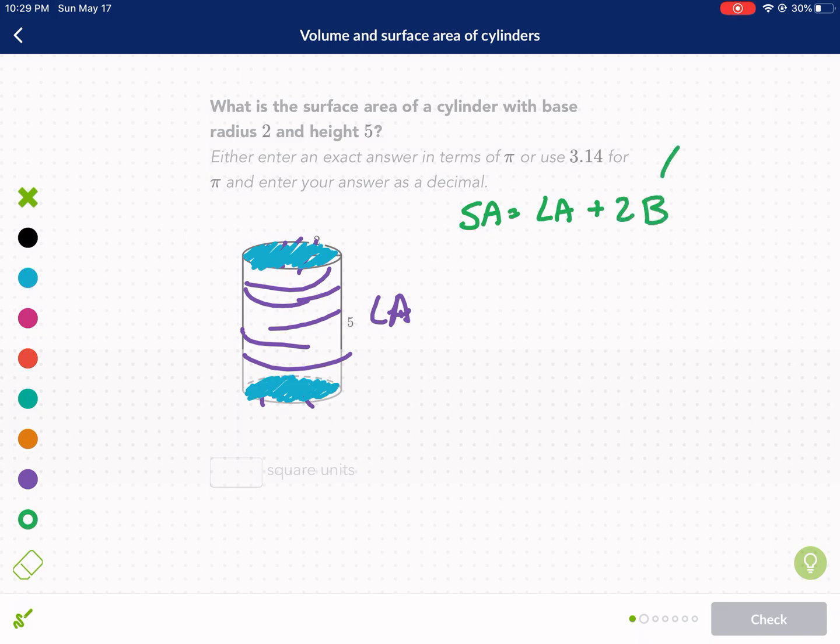And this big B means area of a base. Let's go ahead and start with what we know. We know the area of a base is equal to πr². We know the radius is 2, so we can plug that in, and we have the exact same area of the base. So we're going to plug in 4π, but don't forget that we have to multiply that by 2 because we need two bases.